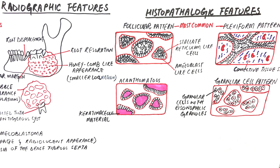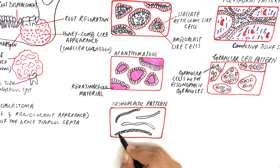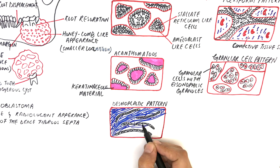In the desmoplastic pattern, ameloblastoma contains cords and islands of odontogenic epithelium. These cords are smaller in size and are embedded in a densely collagenized connective tissue stroma.